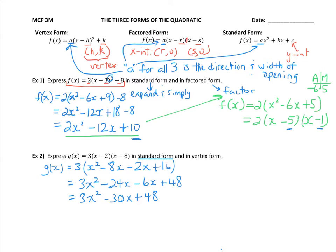All right, to my expanded and simplified form, I have g(x) being equal to 3x squared minus 30x plus 48. So that's my standard form.